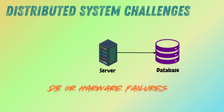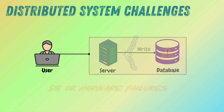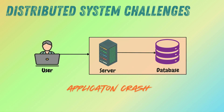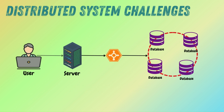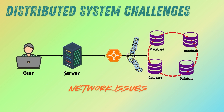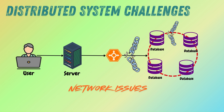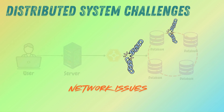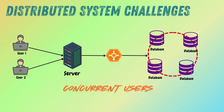In distributed systems, many things can go wrong. Some common challenges include: the database or hardware can fail anytime, even during a write. Applications might crash mid-operation. Network issues can cut off the application from the database or isolate database nodes from each other. Multiple clients might write to the database simultaneously, potentially overwriting each other's changes.